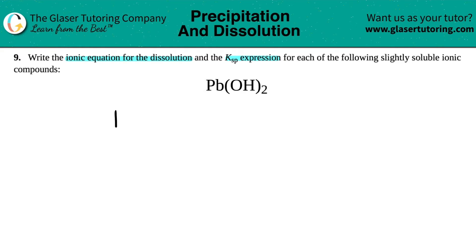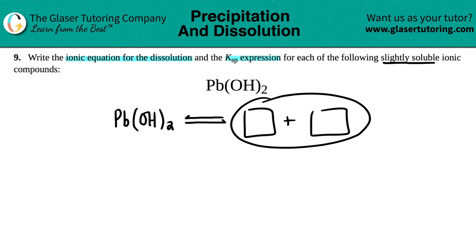So Pb(OH)₂, and they say that this compound is slightly soluble. Slightly soluble means that at equilibrium, so I need to have those double arrows, at equilibrium, not much of the ions are going to be made. You're mostly going to have this compound, which is going to be a solid, but we still have to find out what those ions are.